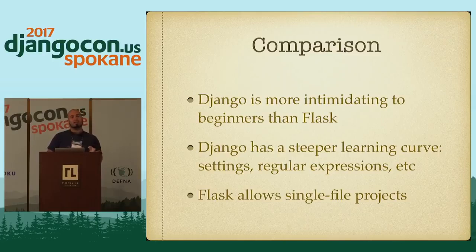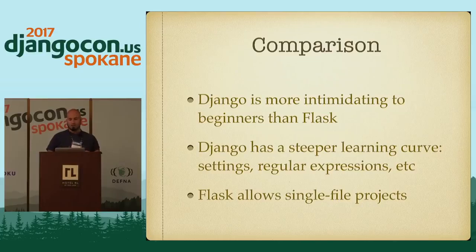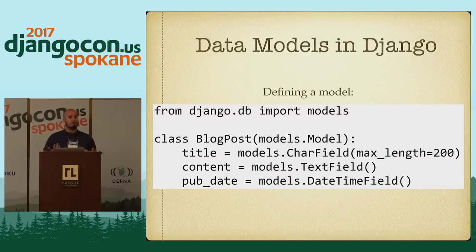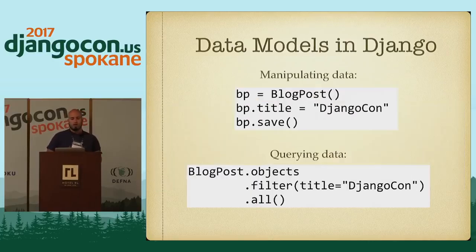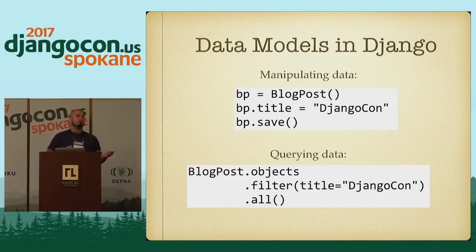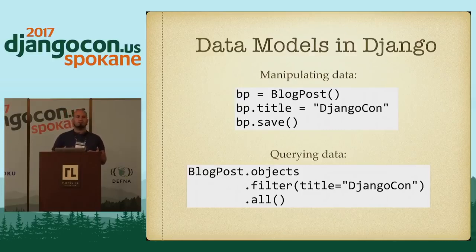But projects are generally more complicated than Hello World. Typically you want to store some data in a database, modify it, and render it on the front end. So how do you do data modeling? In Django, we use the Django ORM — you do 'from django.db import models' and define a basic blog post model. To manipulate the data, you create an instance, assign information to properties, and call object.save. You can query the database with BlogPost.objects, applying filters and selects and all the standard things you'd expect.